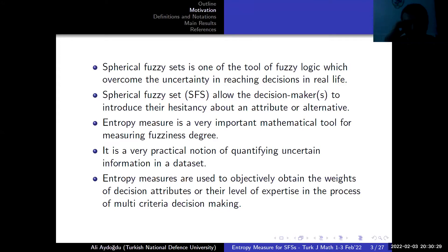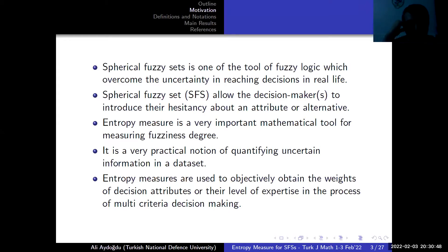Each membership degree should be between zero and one, and their sum can be between zero and three. Pythagorean sets consist of membership and non-membership degree, and their sum squared should be between zero and one. The spherical fuzzy set combines these two fuzzy sets along with other fuzzy sets like intuitionistic fuzzy sets.